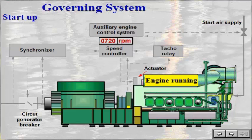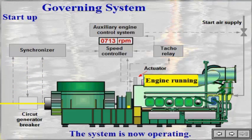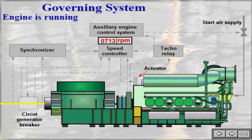In multi-engine systems, when the engine reaches normal running speed, the synchronizer starts comparing frequency, phases, and voltage on the net side with the corresponding values on the generator side. When they are equal, the synchronizer closes the circuit generator breaker and the generator set is connected to the bus. The synchronizer is automatically switched off afterwards.